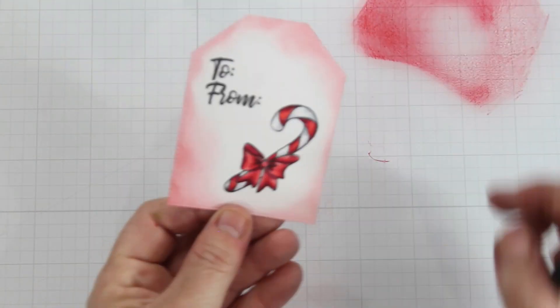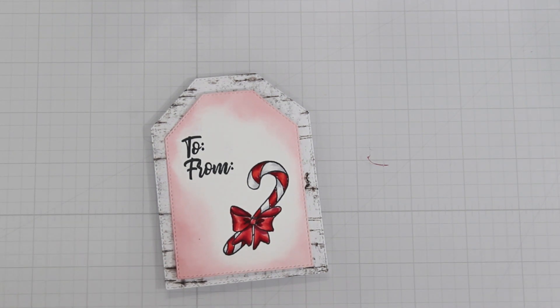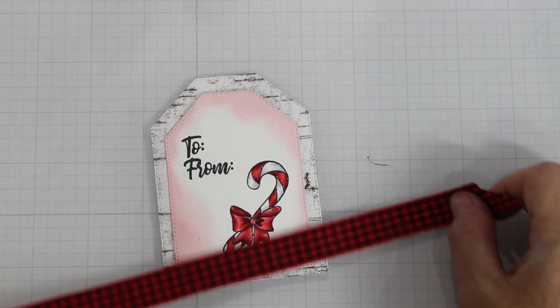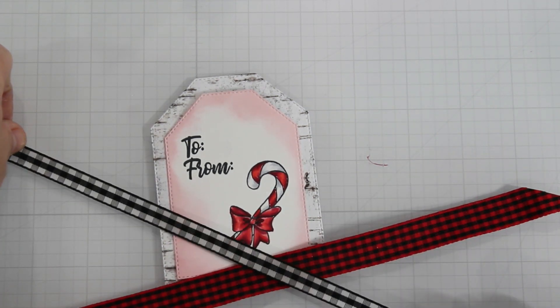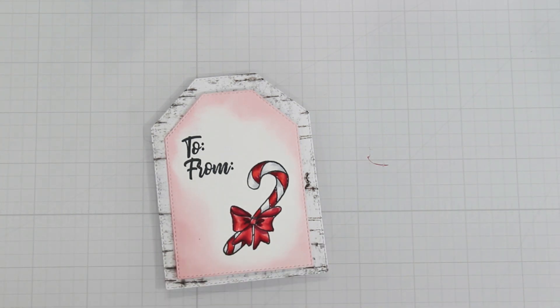So from here I'm just kind of testing everything out I did put some white highlights in off-camera and I used a birch paper and here I'm just trying to decide what ribbon I want to use.